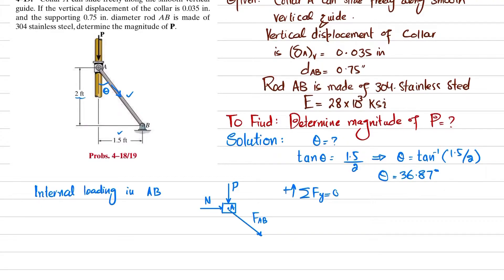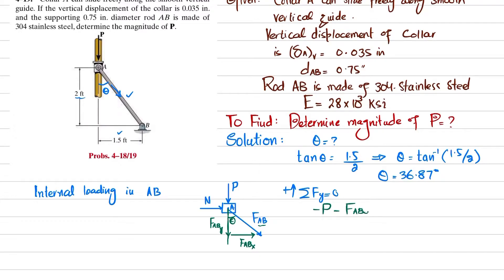F_AB makes an angle theta with the vertical axis, so it has two components: one along the vertical direction and one along the horizontal direction. Splitting F_AB: the vertical component is F_AB_y and the horizontal component is F_AB_x. Using sum of forces in the y-direction equals zero (upward positive): minus P minus F_AB_y equals zero, so F_AB_y equals minus P.